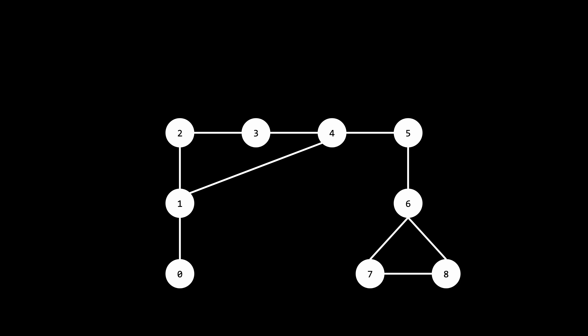We need to figure out what makes a connection critical or non-critical. After looking at a few example graphs yourself, you might be able to observe that a connection is critical if and only if it is not part of a cycle in the graph. On the other hand, a connection is non-critical if and only if it is part of a cycle. So we've essentially transformed our problem into a cycle detection problem. If an edge is part of a cycle it is not critical, and if it is not part of a cycle then it is critical.